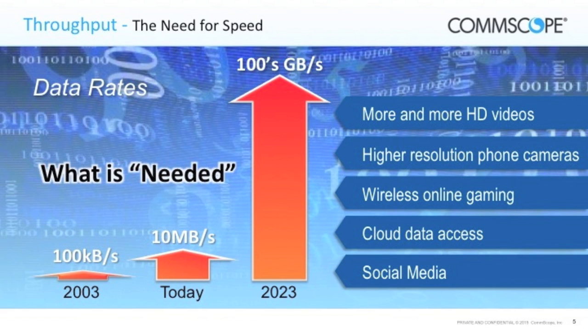Not only do we need more capacity, we also need to get data faster. Currently it's like 10 megabits per second, and by 2023 it's expected to be in the hundreds of gigabits per second. One key driver is that phones have much better camera resolution, so videos take significantly more data to upload. Higher resolution pictures can be up to 5 megabytes, so in order to improve user experience, we want those uploaded at the same speed as lower resolution pictures in the past.